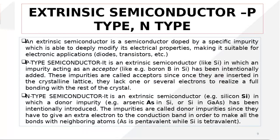Now we will discuss extrinsic semiconductors. When we add some kind of impurity to semiconductors, this is because intrinsic semiconductors are not very good conductors — their conductivity is very low. If we want our semiconductor to be useful in various electronic devices, we add impurities, and by adding these impurities the semiconductor's conductivity increases very sharply. Conductivity increases with doping.